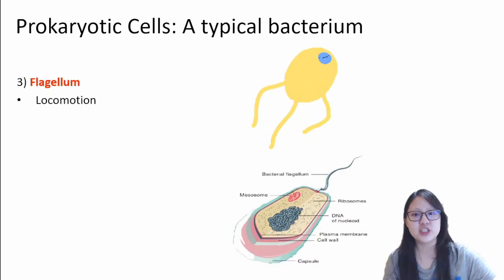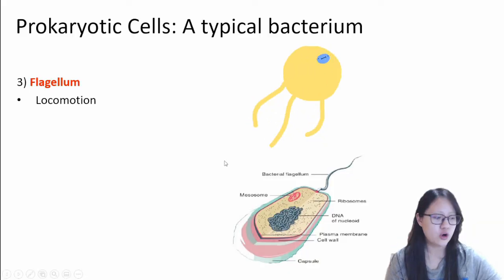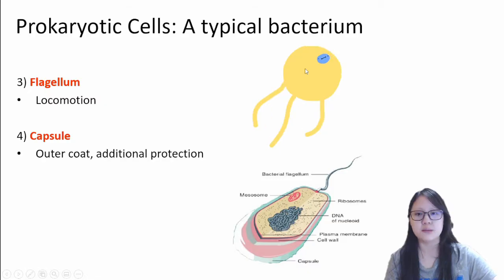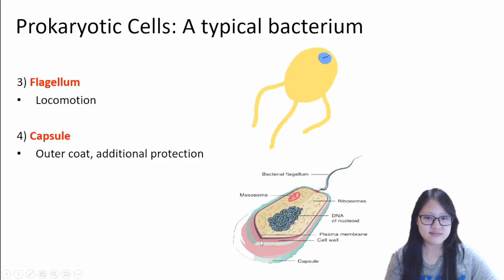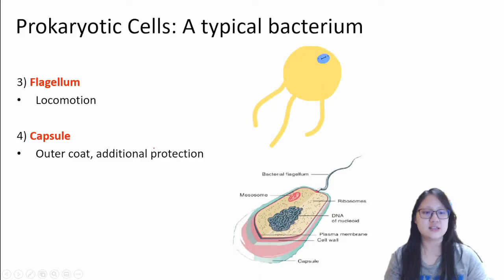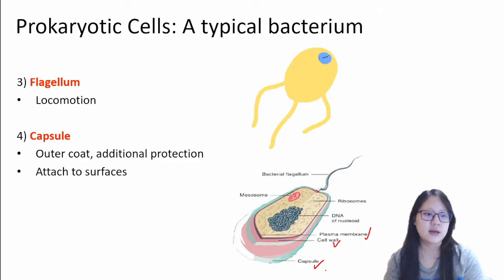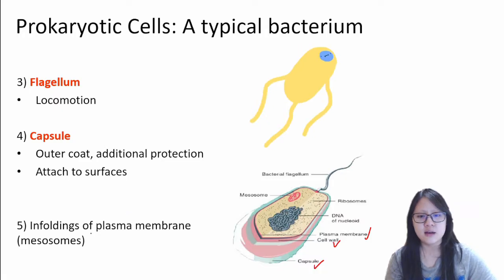The next one is flagellum. Flagellum was something we talked about briefly, saying that it is not cilia, not microvilli. In prokaryotic cells, this finger-like extension for locomotion is called flagellum, and it allows the bacteria to swim and move. Capsule is also another structure sometimes present — it's another layer outside the plasma membrane and the peptidoglycan cell wall. Bacteria with capsule have additional protection and are able to attach to different surfaces using the capsule.